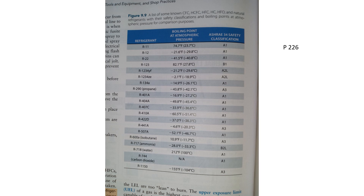On page 226 there is a boiling point chart. Someone may ask: what refrigerant has a boiling point of negative 28 degrees Fahrenheit? If you look in the index under 'B' for boiling point, it'll take you to page 226 where the chart shows that negative 28°F boiling point belongs to R-717, which is ammonia. You might want to highlight that.